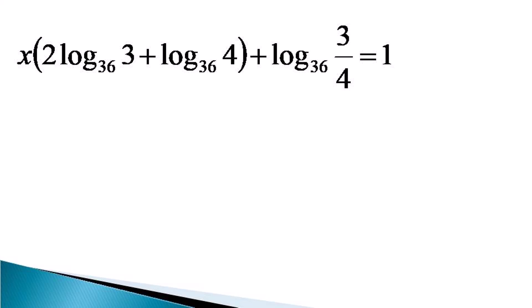So this 2 log 3 to the base 36 plus log 4 to the base 36 also can be changed, and it becomes x log 3 squared to the base 36 plus log 4 to the base 36, and we take all the constant terms on the right hand side.